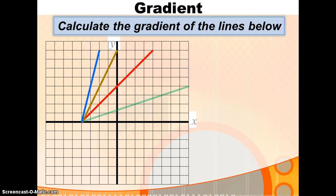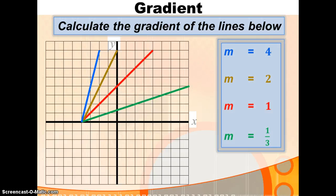Now, as we look at these 4 lines, you may wish to pause the video and consider what the gradient of each line is by remembering the formula rise over run. Having done that, you should have found the answer to be 4, 2, 1, and 1 third.